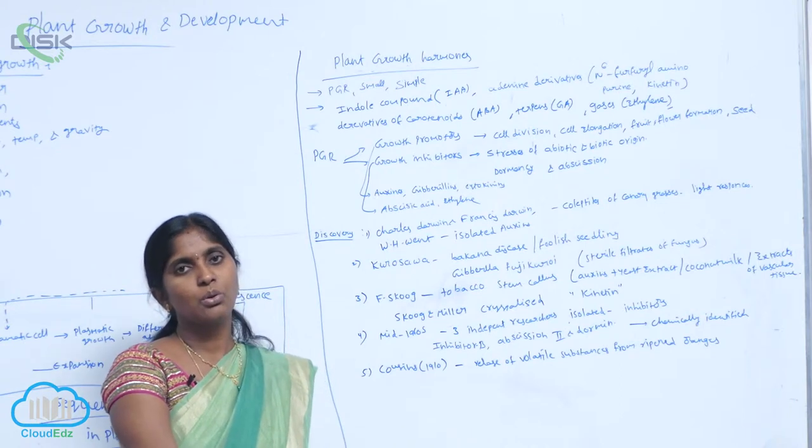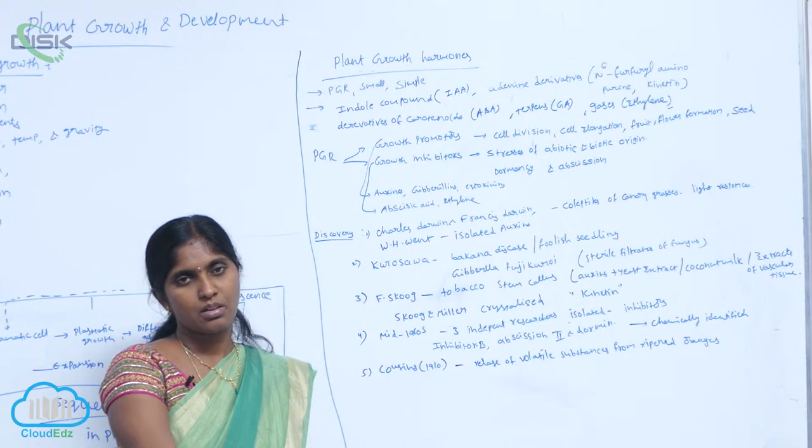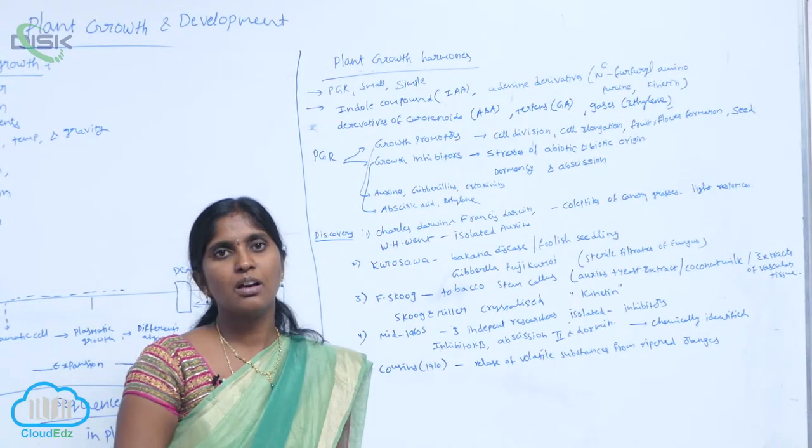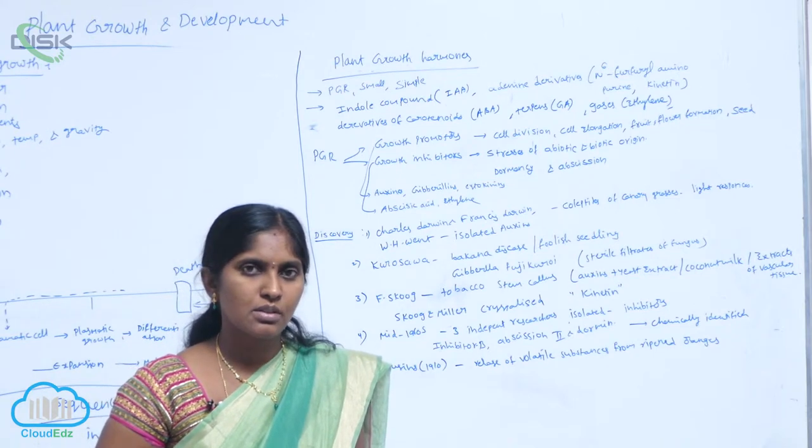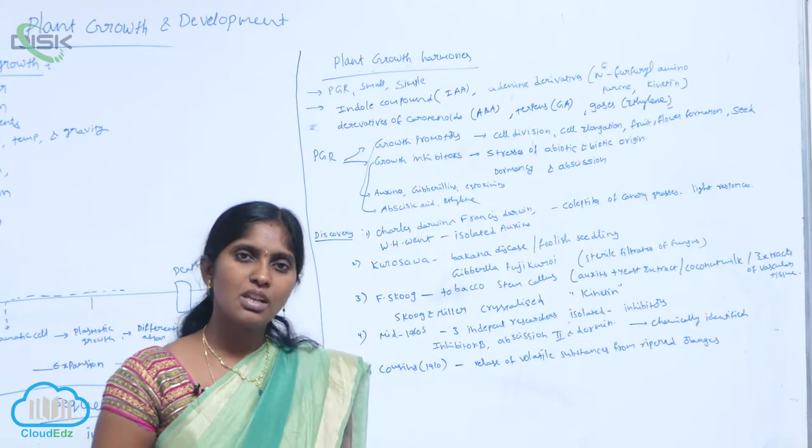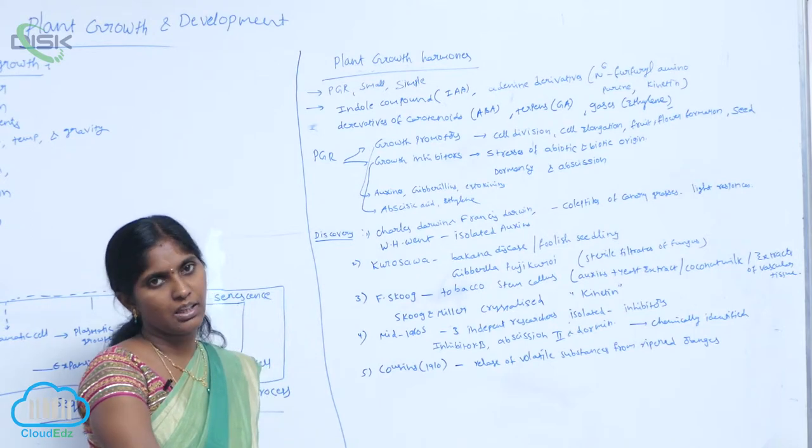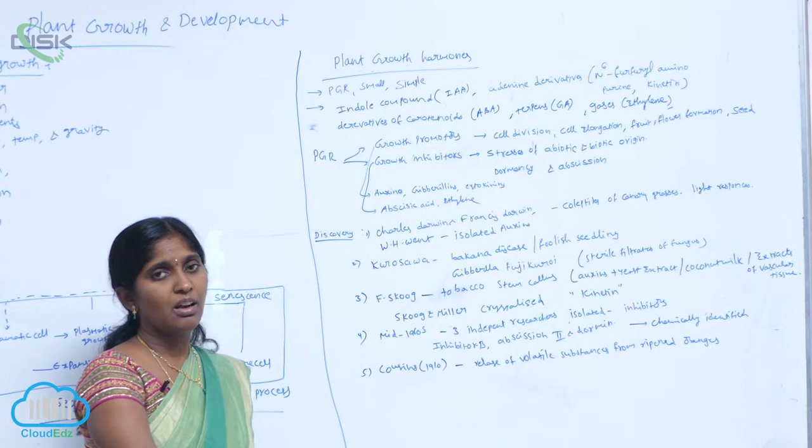Growth promoters, growth regulators. Five types of plant hormones are identified. What are the five types? Auxins, gibberellins, cytokinins, abscisic acid, and ethylene. From where are they formed?